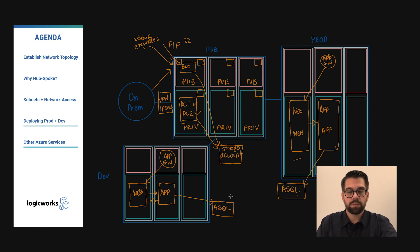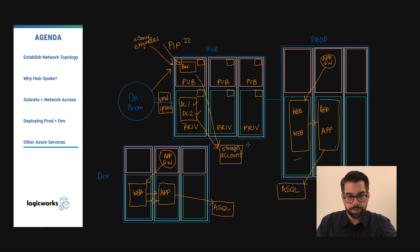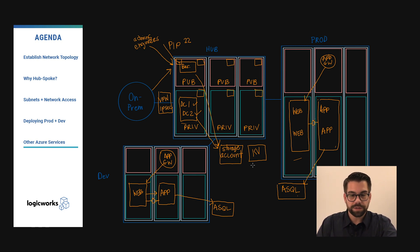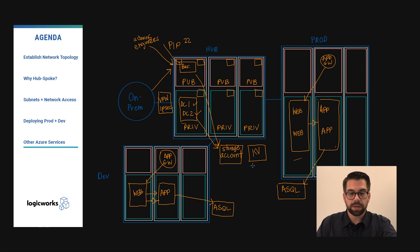Now that we've created our overall architectural diagram, there are a couple of other services we want to put in place to help secure, manage, and support the environment moving forward. The first one we're going to deploy is a key vault. This allows us to store our secrets and certificates in a secure manner and prevents us from storing any application secrets in our source code. These can be dynamically looked up at any point using the Azure API.